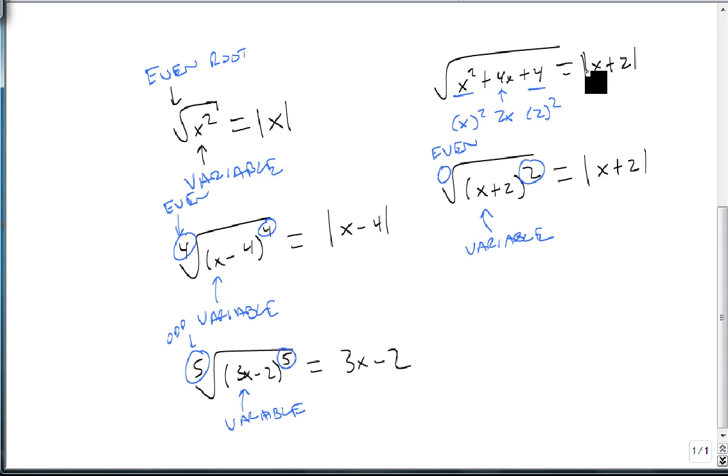I keep saying that there's a variable, and that's why we need an absolute value. Remember that means we have to leave the absolute value around. If I were to do the square root of (-5)^2, I notice that my power matches my root, and I don't have a variable,